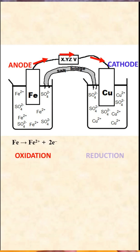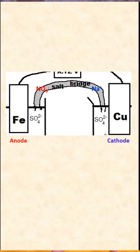At the cathode, reduction is taking place, which means that a reactant gains electrons. In order for a galvanic cell to operate, a salt bridge is needed to keep the charge from becoming unbalanced, allowing ions to flow. At the opening to the salt bridge, anions flow toward the anode, and cations flow toward the cathode.